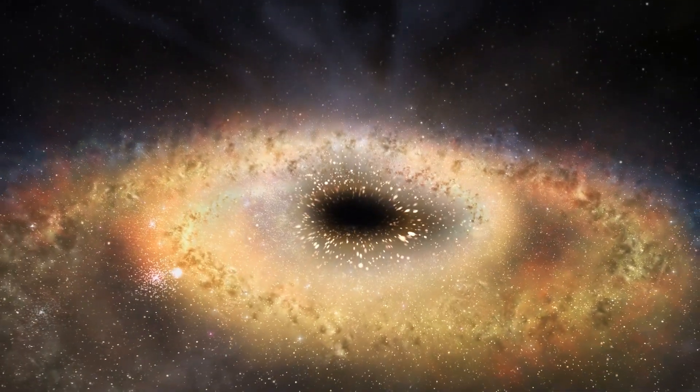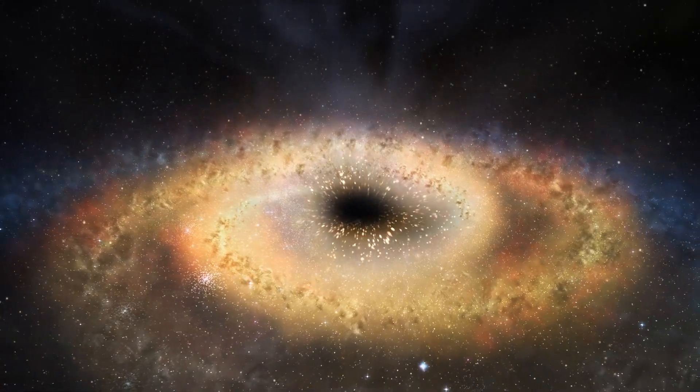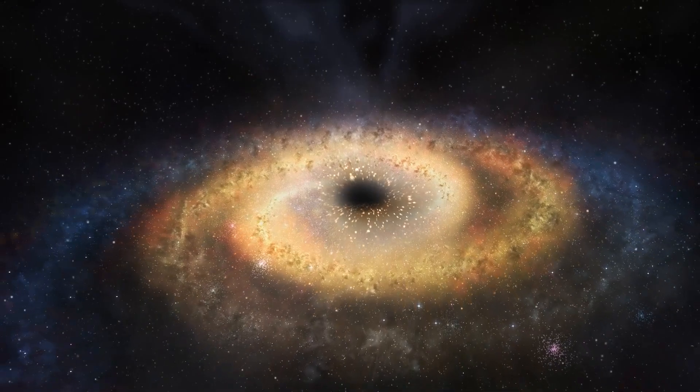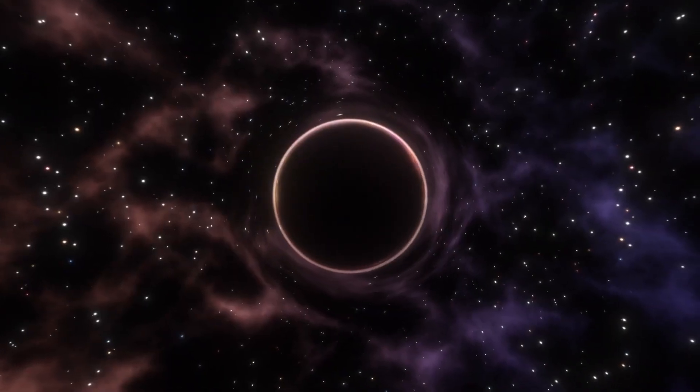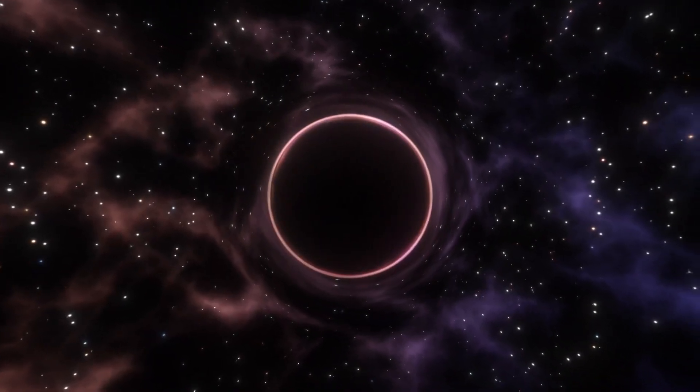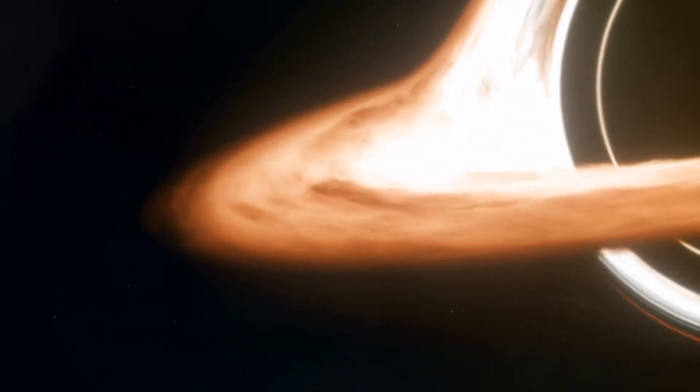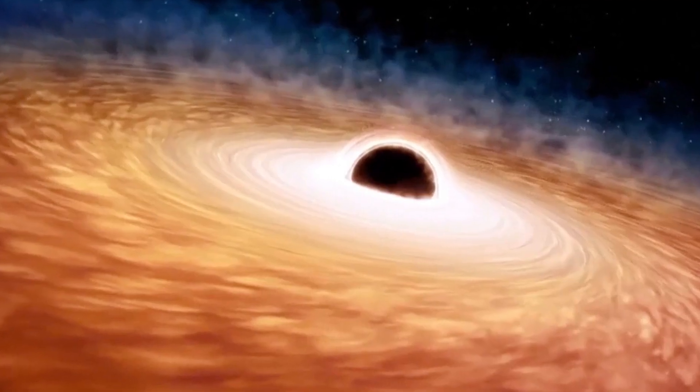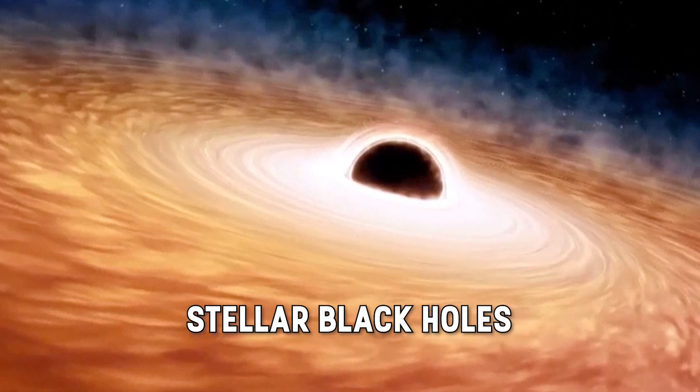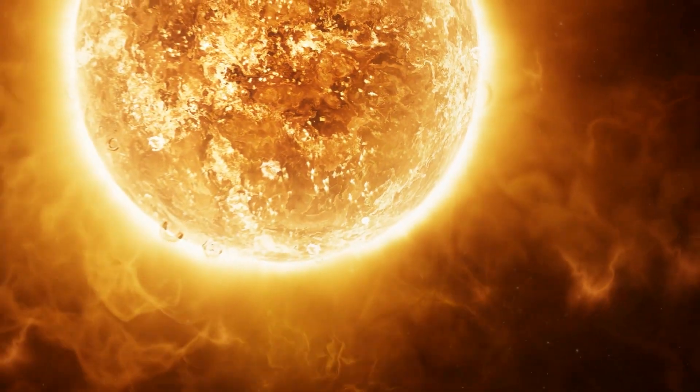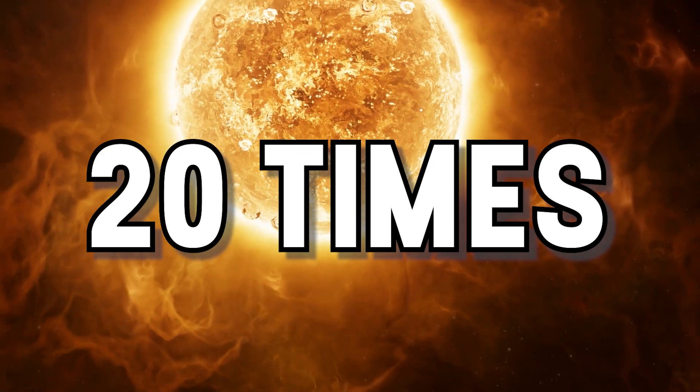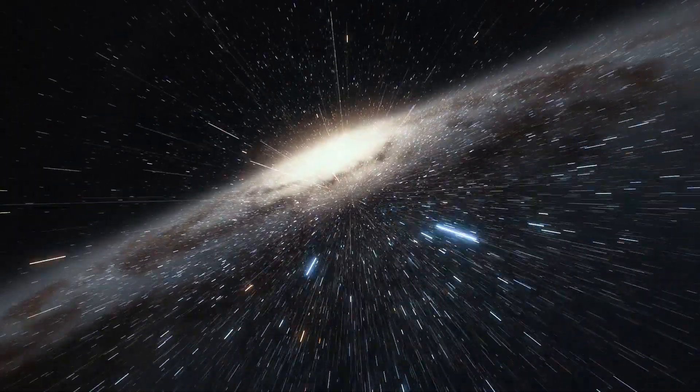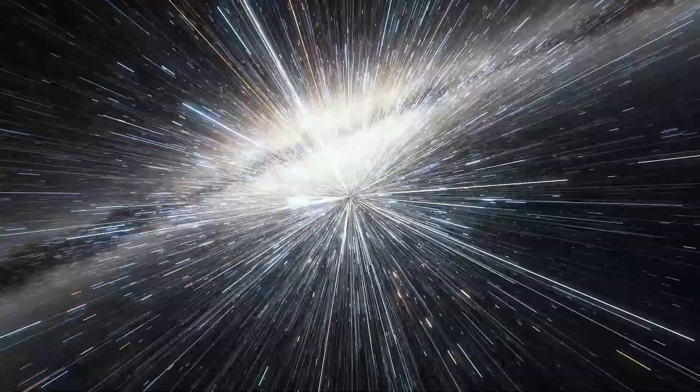Black holes come in various sizes, with one common formation process being the collapse of massive stars at the end of their life cycle. This collapse condenses the star's mass into a tiny space, resulting in an incredibly dense and powerful gravitational field. These are known as stellar black holes, with their mass potentially reaching up to 20 times that of the sun. It's quite possible that our galaxy, the Milky Way, hosts numerous stellar mass black holes.